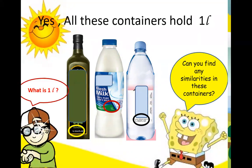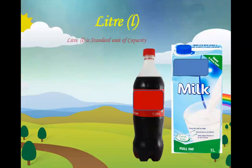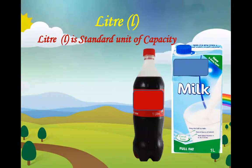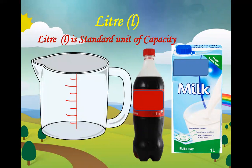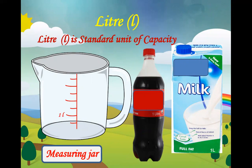What is one liter? Liter, abbreviated L, is the standard unit of capacity. Now this is the measuring jar we are going to use. The small lines indicate half a liter and the big lines indicate one liter. We measure from the bottom. On the measuring jar, the big lines show one liter, two liters, and three liters. You can also see the circles on the cola can and the milk bottle — it's circled: one liter.